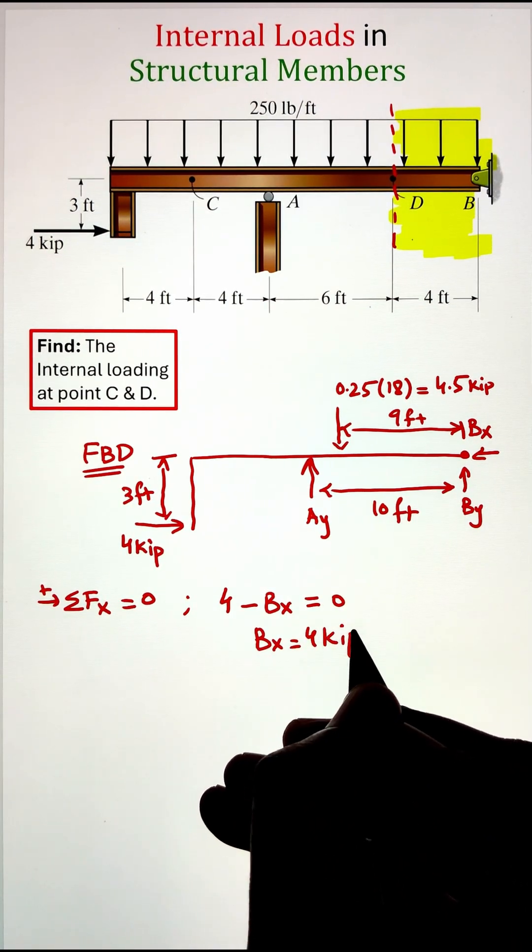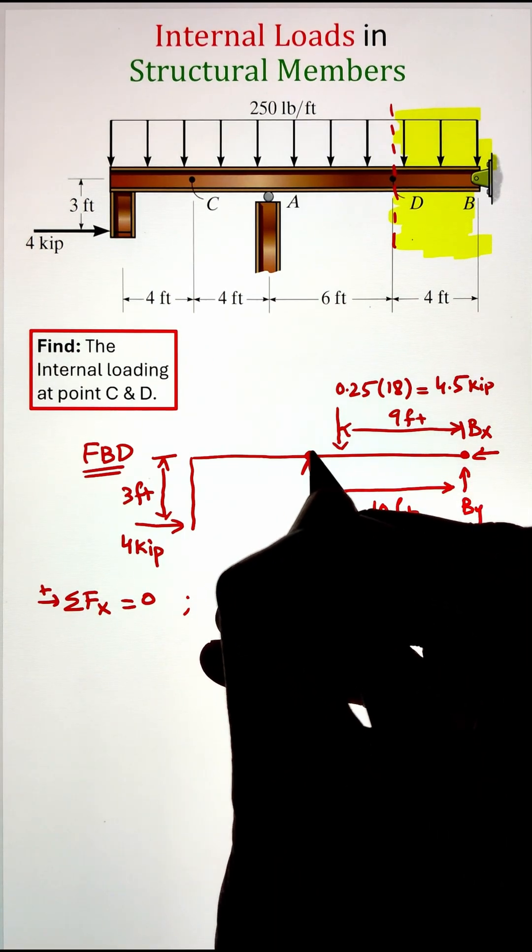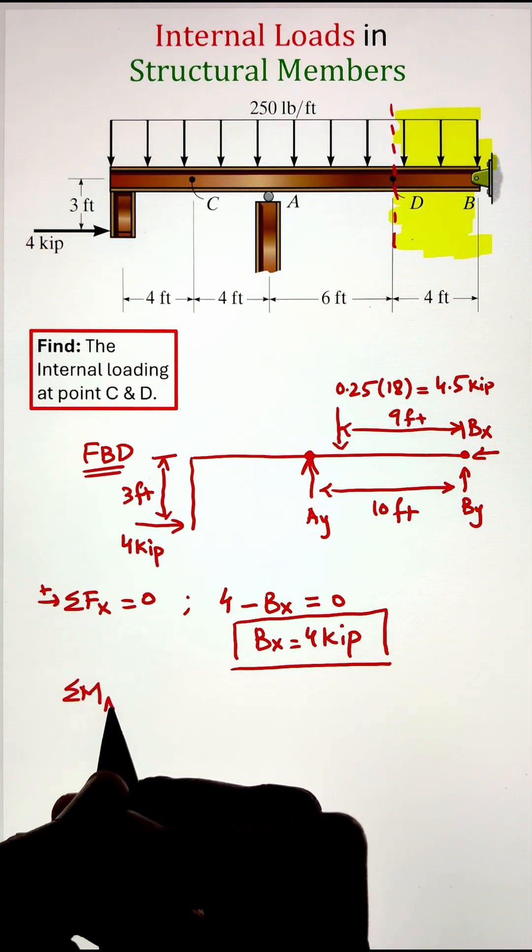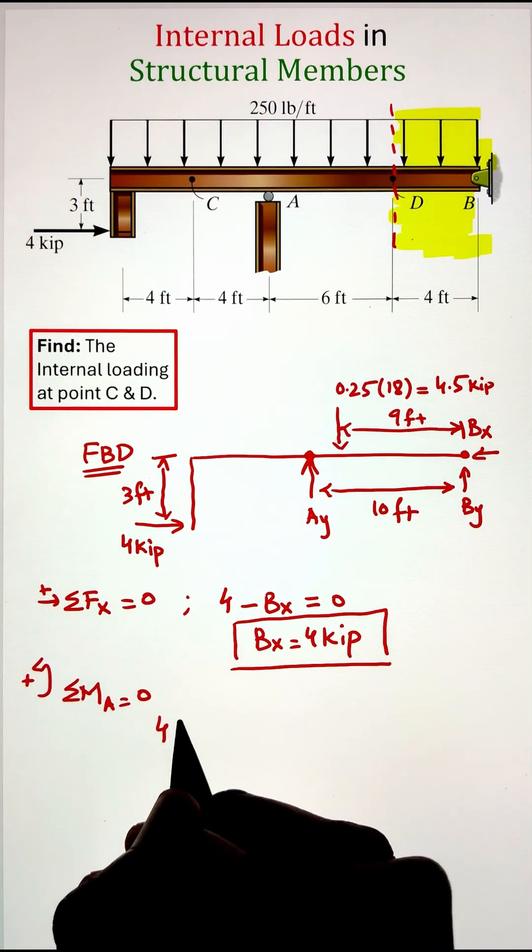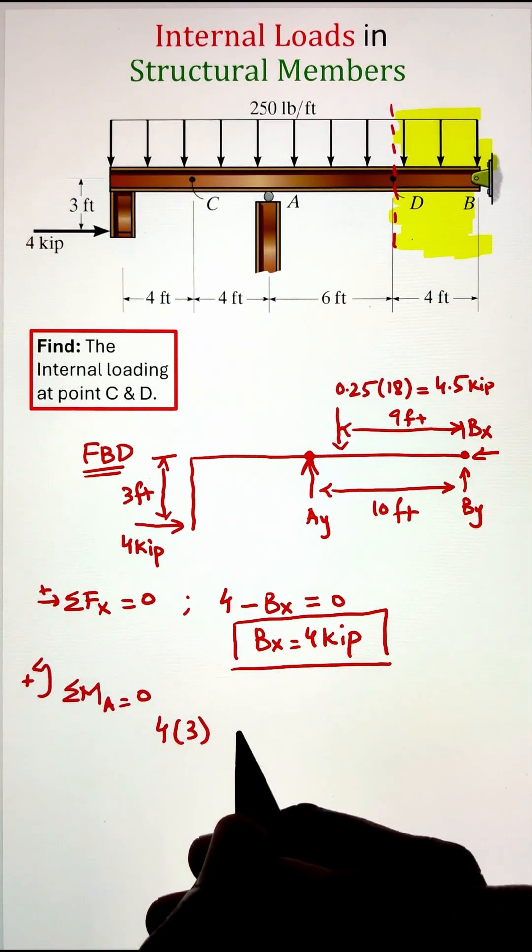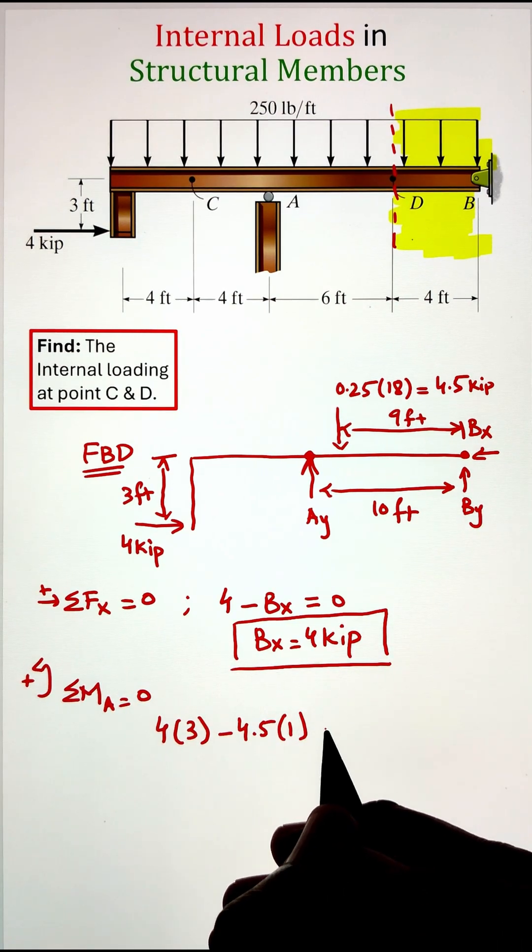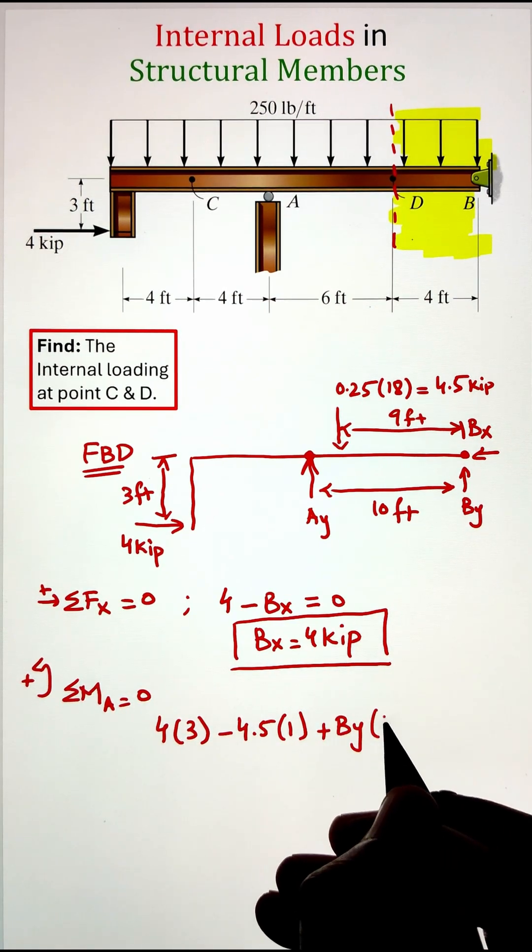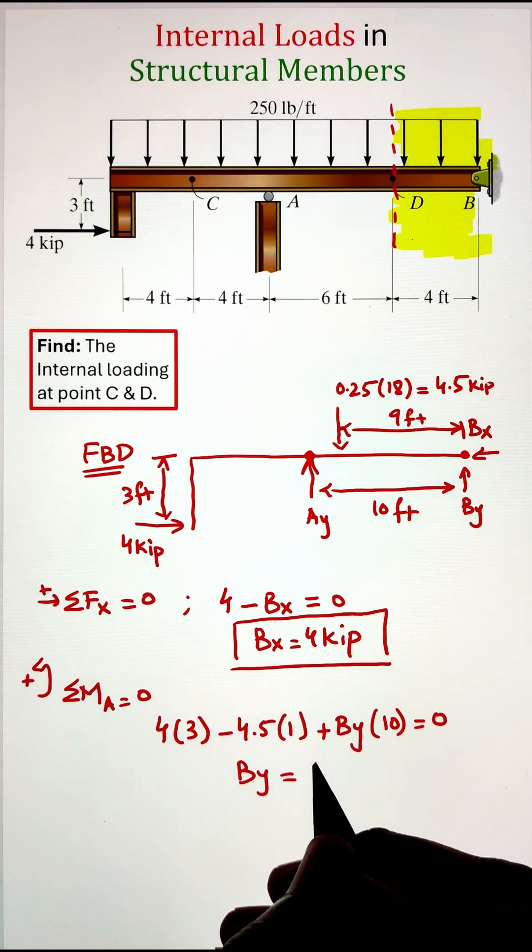Next we can go ahead and write summation of moment equation at point A equals zero. Since we are doing the moment at point A, the force AY won't contribute to the moment as it's passing through the point of action. We have our external load of 4 kilopounds that has a moment arm of 3 making a counterclockwise moment, whereas the distributive load that is converted into a point load of 4.5 kilopounds has a moment arm of 1 and that is making a clockwise moment.